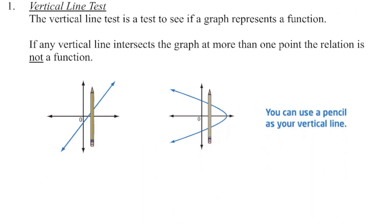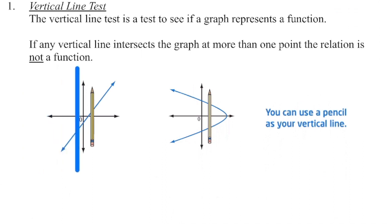If we know on a graph there can only be one y value for each x value, we look at every point along the x-axis and check that our graph only hits one y value. The easiest way to test this is the vertical line test: take a vertical line that runs up and down and run it across the graph. On the first graph, at every position the line touches only one point — this is a function. You can use a pencil as your vertical line; just run it along the graph and count how many times it touches.